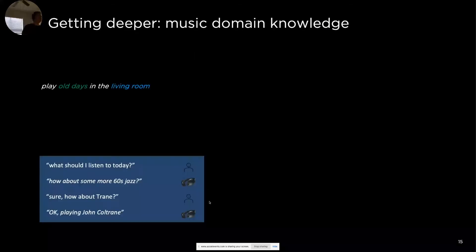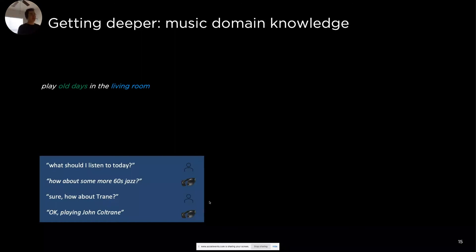Entity linking is just one small piece of this puzzle. If you've done everything right with NLP, knowledge base, and these kinds of things, you can still get it right — especially if you take into account user data. Maybe 'old days' by a specific band is most popular and most played. But for more sophisticated tasks like recommending things, musical knowledge is very important. So I will show a little bit of the NLP work for music information retrieval in the next section.